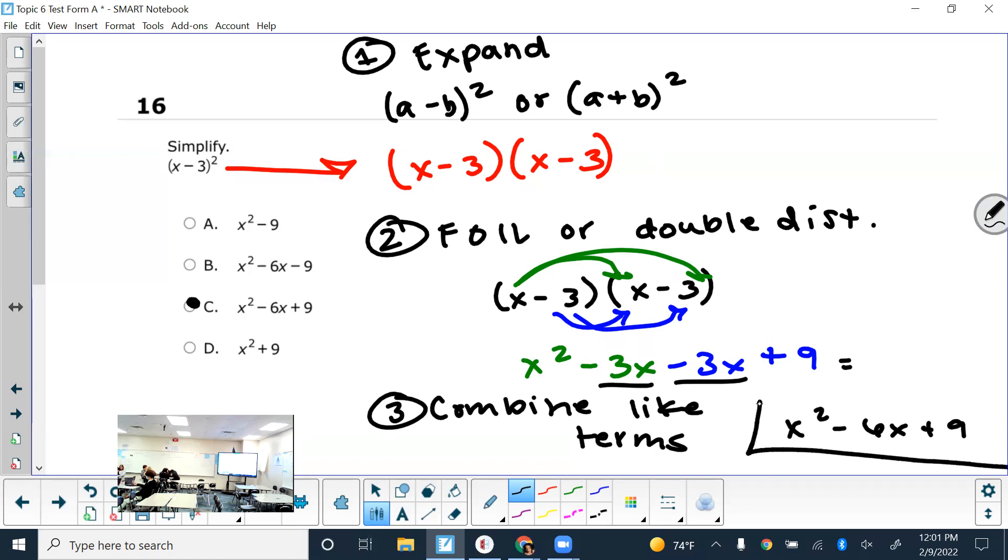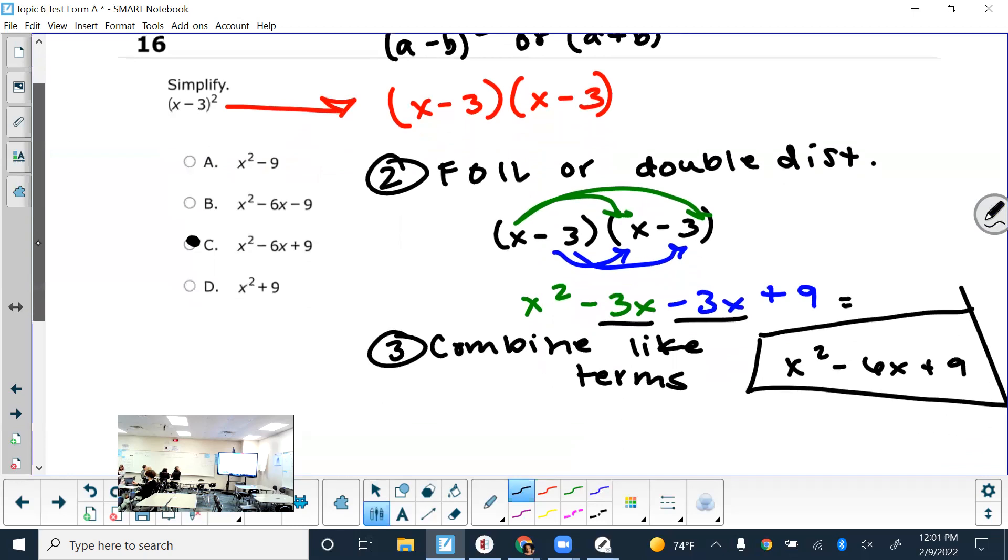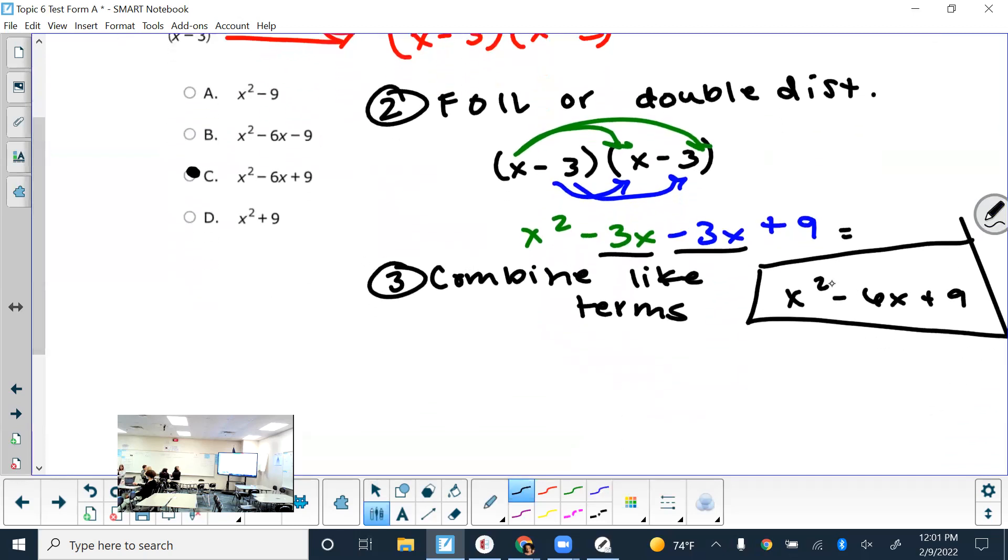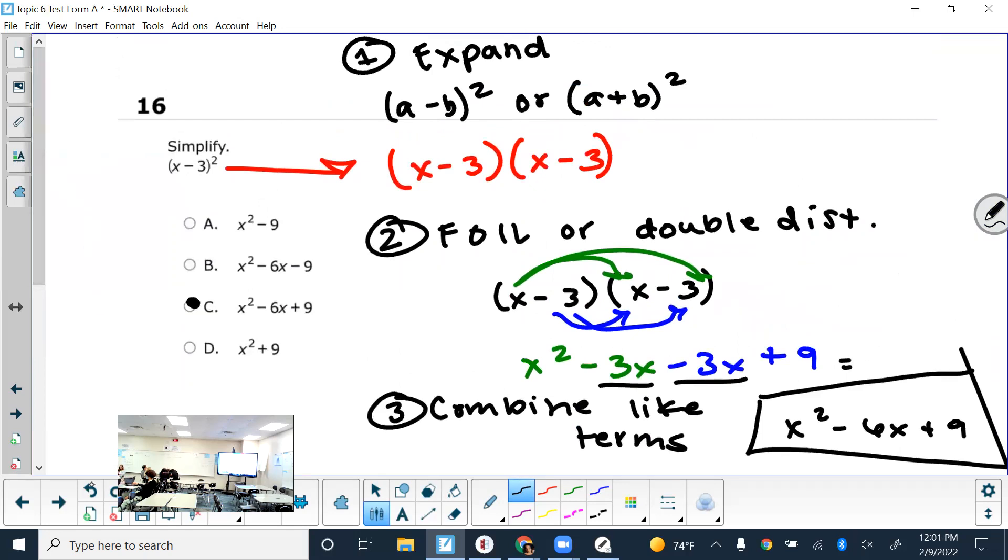Now keep in mind tomorrow it's free response. So a question like this would be worth four points. Because I give you a point for each term that you write correctly. So one, two, three terms. If you have two out of the three written correctly, I'll give you two points. And then I give you another point for having it in standard form. So the instructions say to put your answers in standard form. So questions on this one? Any others from the test?